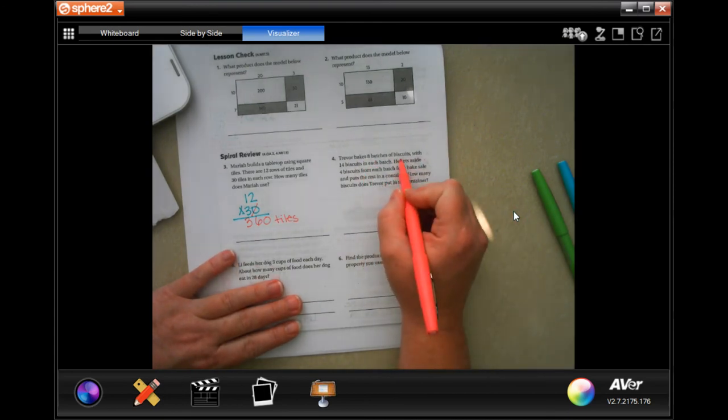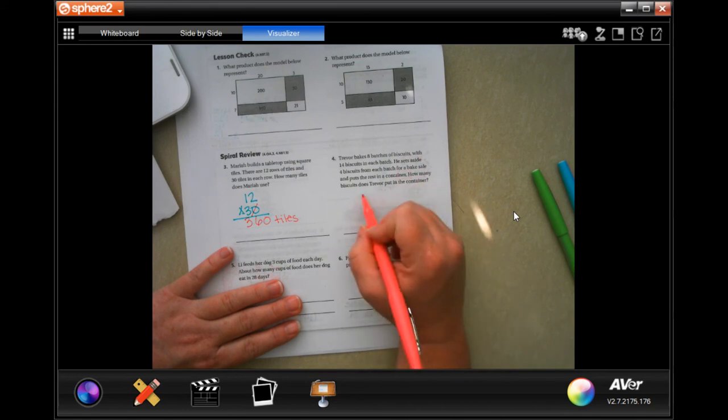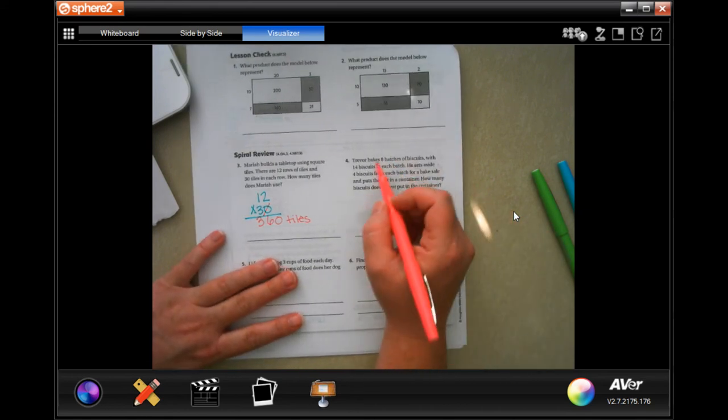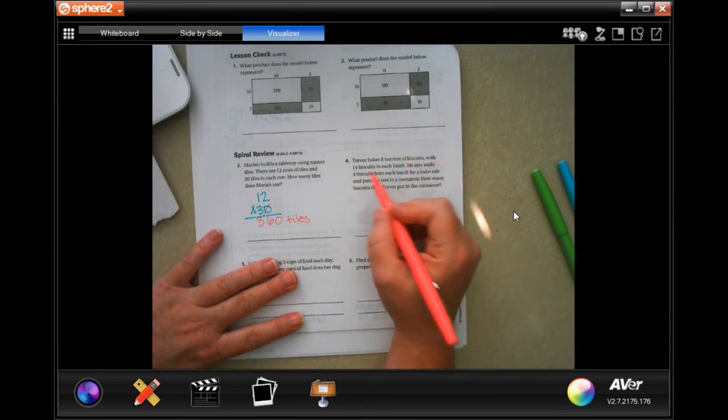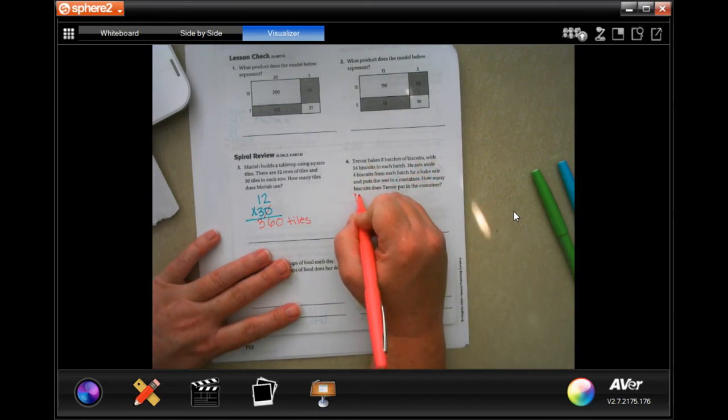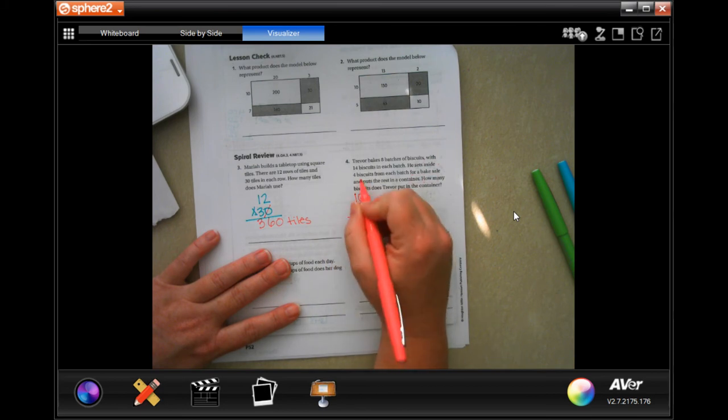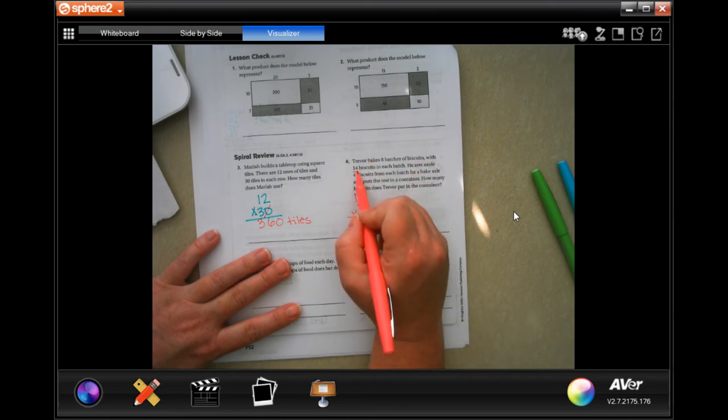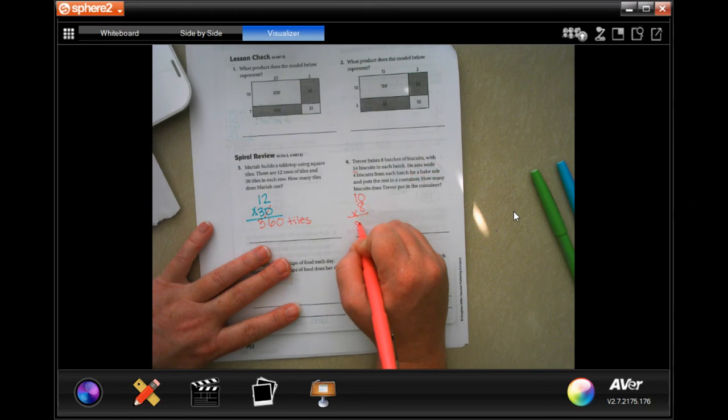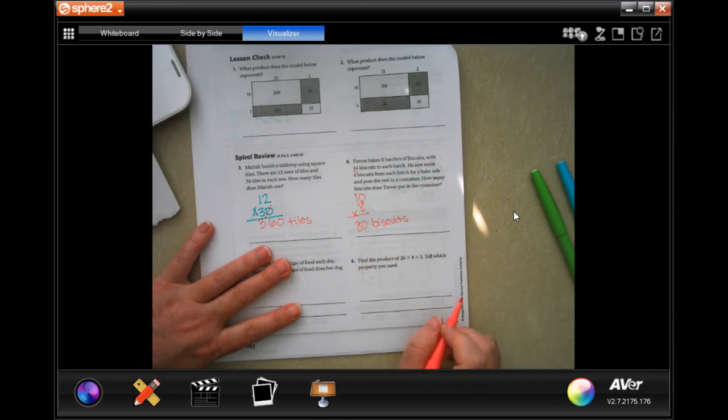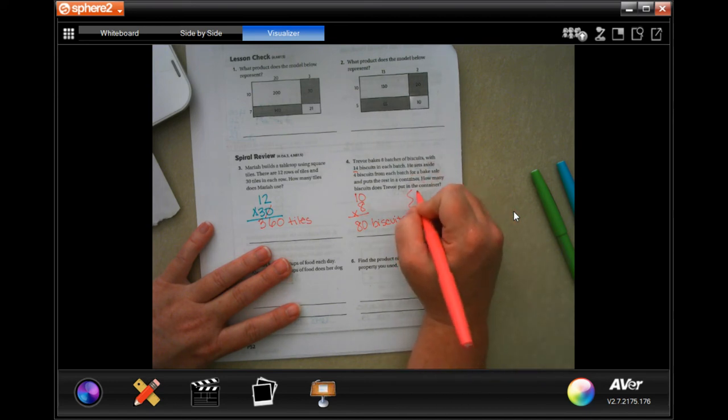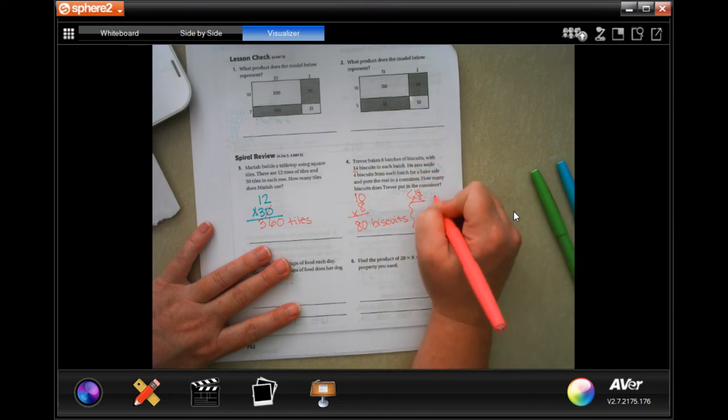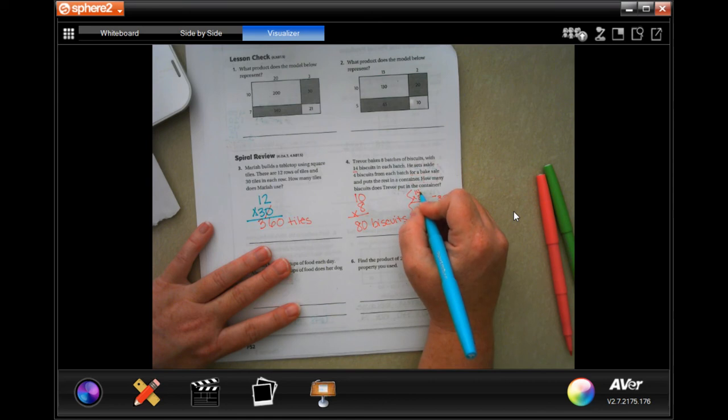So now, 3 times 2 is 6. And 3 times 1 is 3. So, 360 tiles. All right. Trevor bakes 8 batches of biscuits with 14 biscuits in each batch. He sets aside 4 biscuits from each batch for a bake sale and puts the rest in a container. How many did he put in the container?